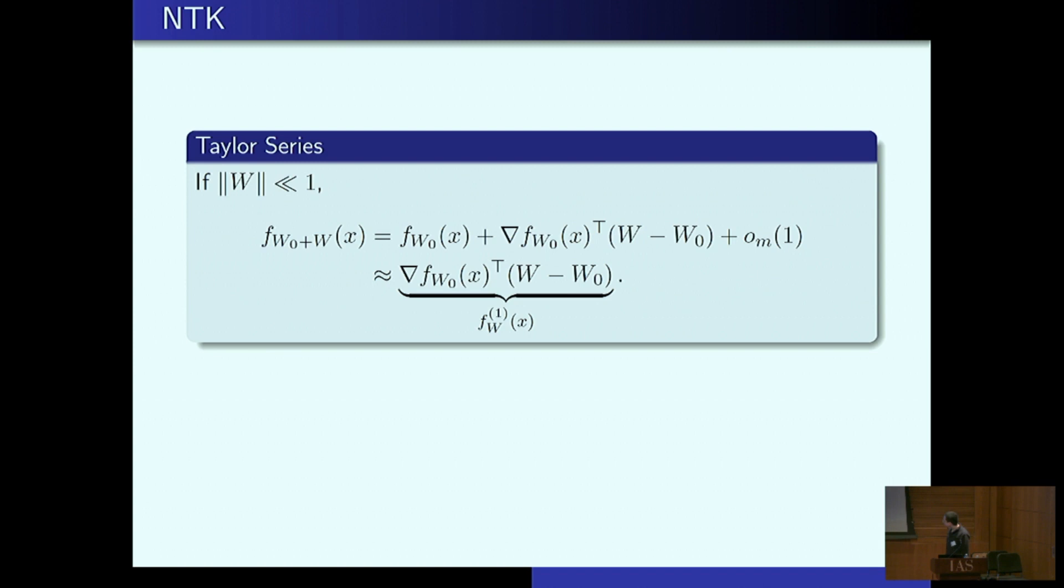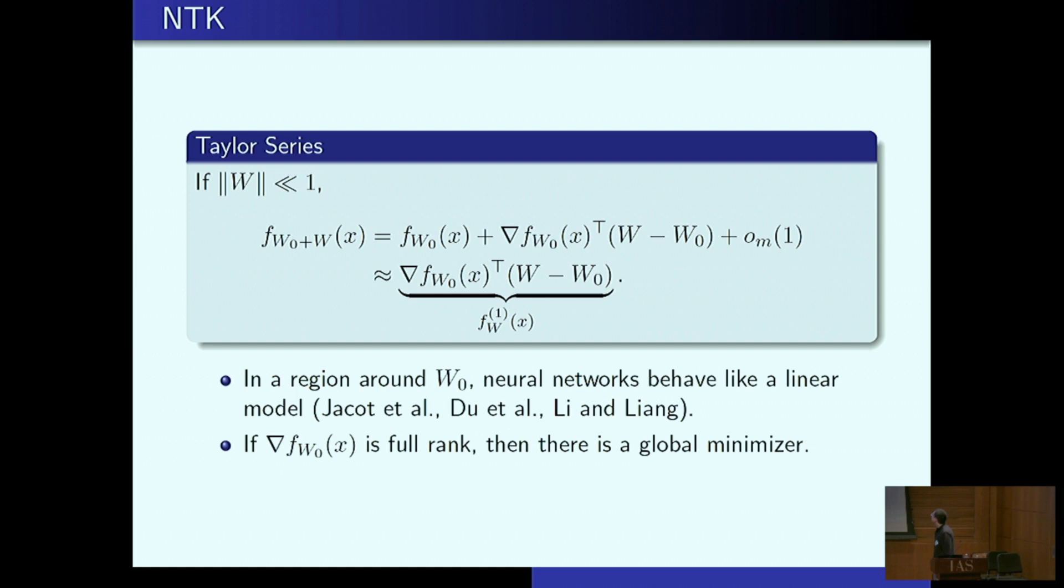So this is the fundamental observation of these papers. If you move, if you stay close to random initialization, you behave like a linear model. And of course, if these linear features you stack them into a Jacobian matrix, this matrix is full rank, then there's also a global minimizer.